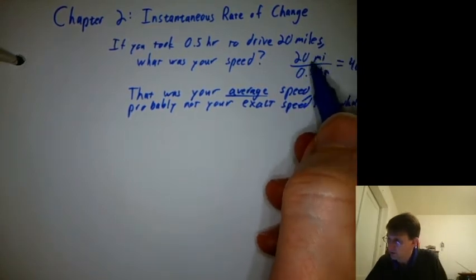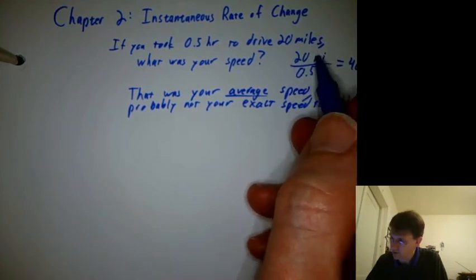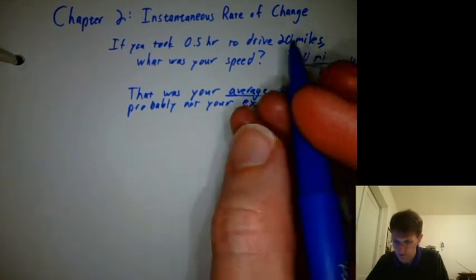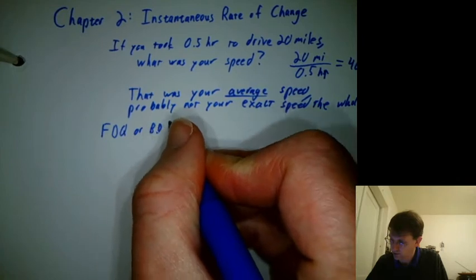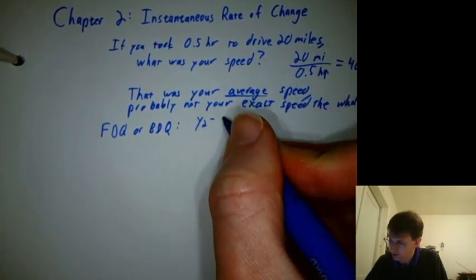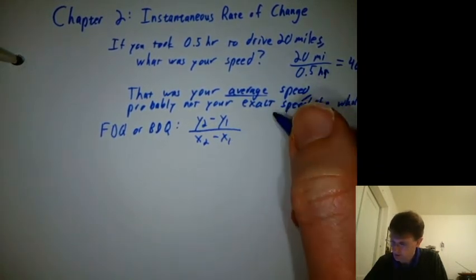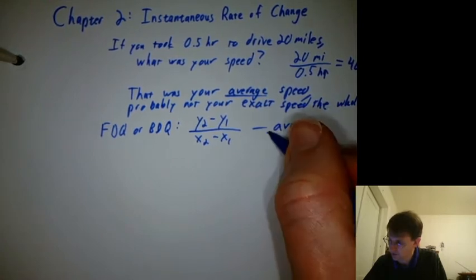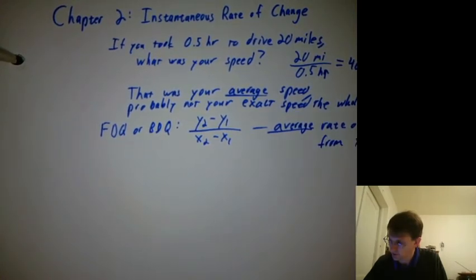What did we do here — this 20 miles and half an hour? You can think of that as the difference of where you started and where you stopped, 20 miles, and the difference of when you started and when you stopped, half an hour — which is like a forward or backward difference quotient. That's y2 minus y1 over x2 minus x1, and that's an average rate of change from x1 to x2.